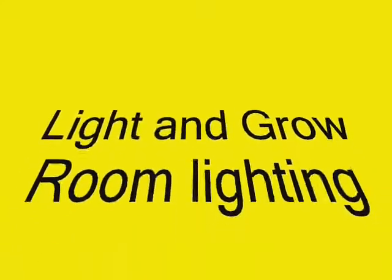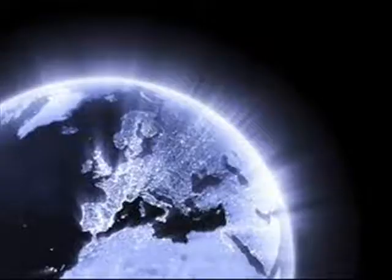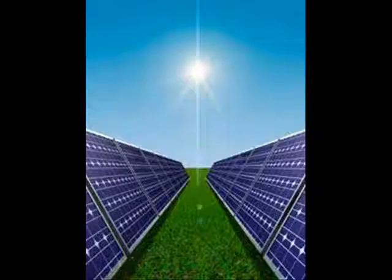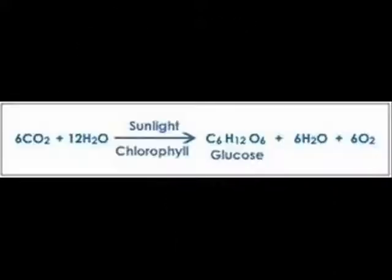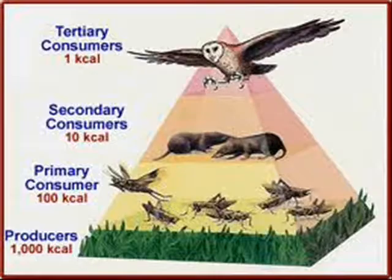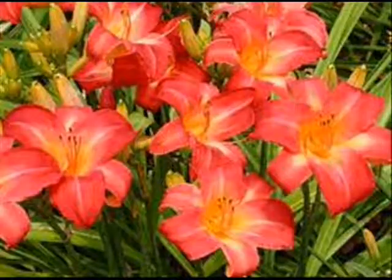Welcome to our instructional video on light and lighting. Did you know enough energy hits the earth from the sun in an hour to power the earth for a whole year? Think of earth's plants as miniature solar reactors, because they take the sun's energy and turn it into a sugar called glucose during the process of photosynthesis.